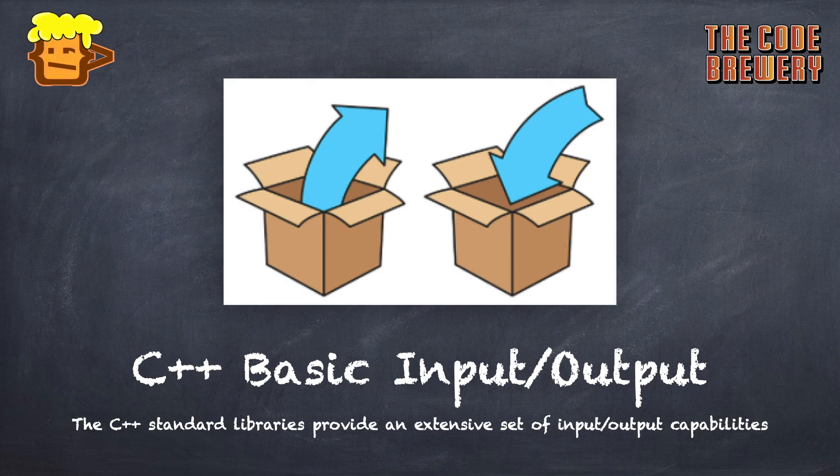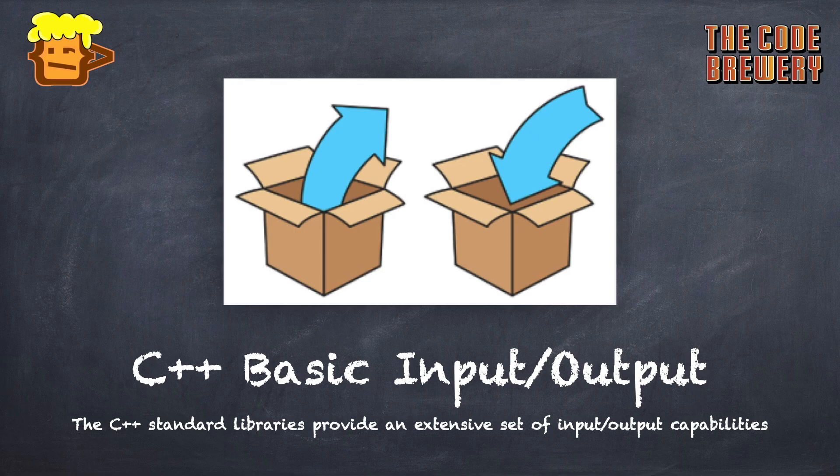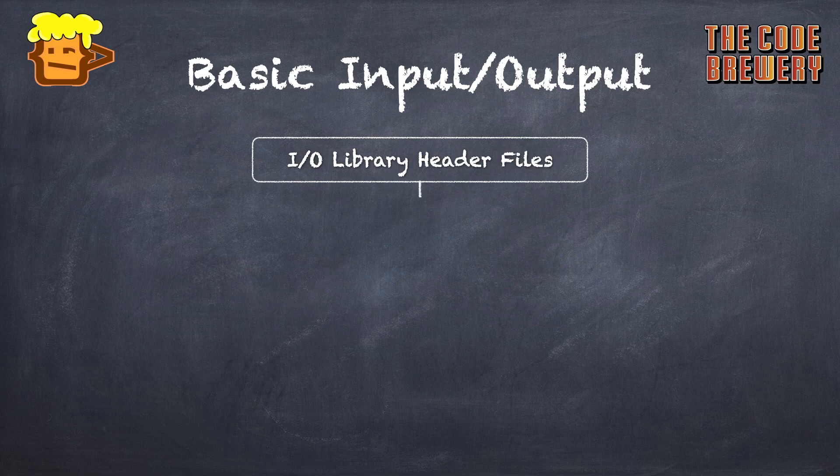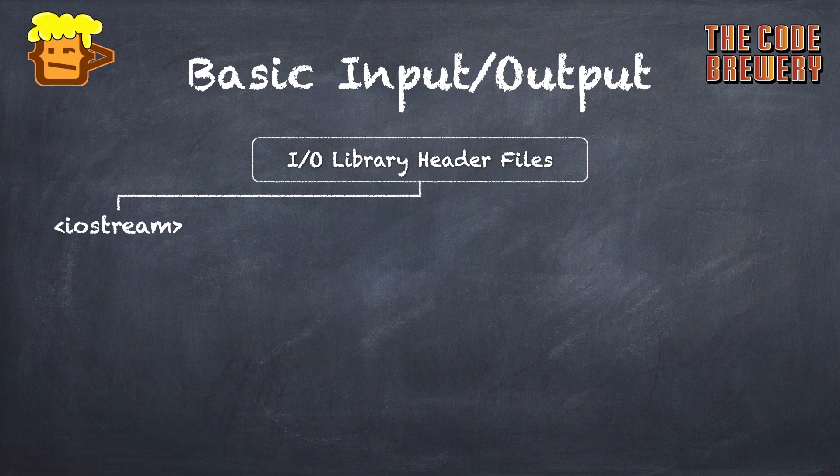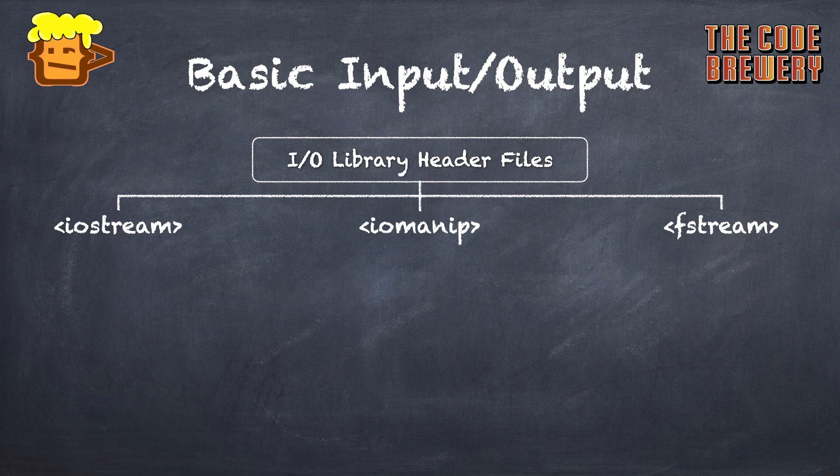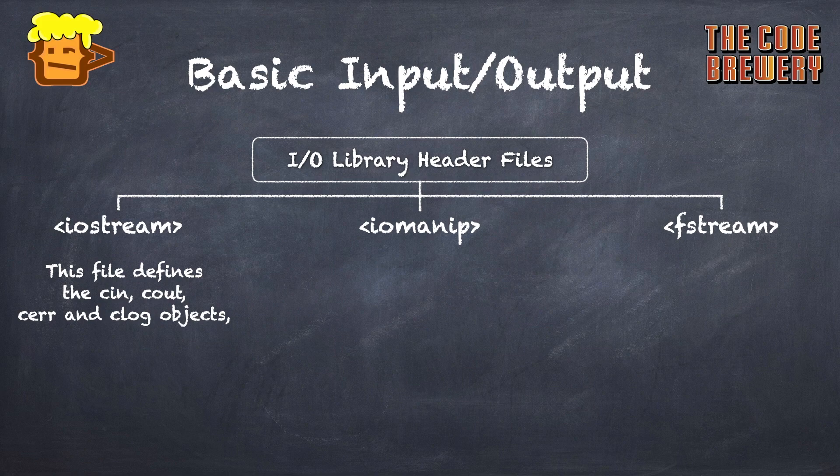Let's talk about three header files most important in C++ programming. The most important input/output library header files are iostream, iomanip, and fstream. From the name iostream, we can see that it stands for input/output stream. This file contains the cin, cout, cerr, and clog objects.